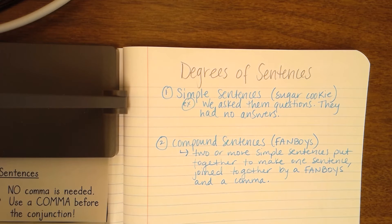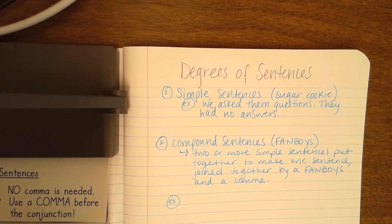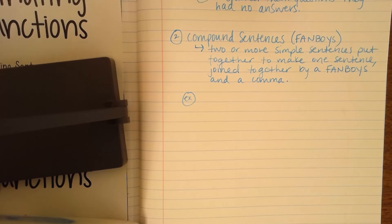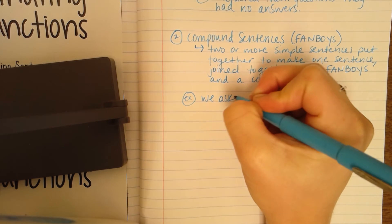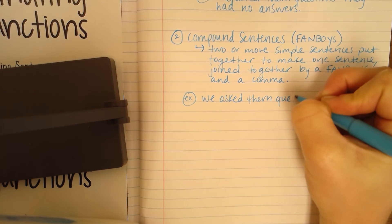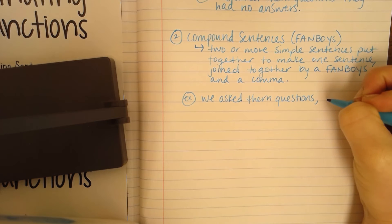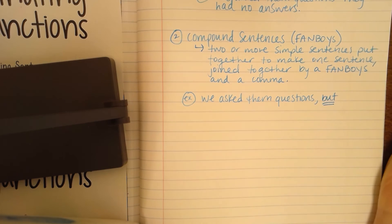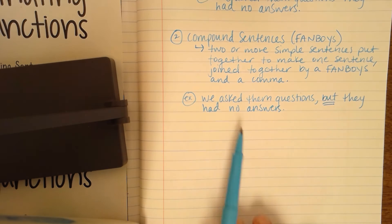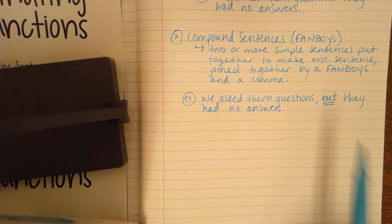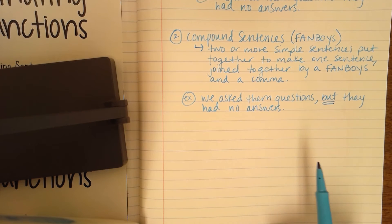Every once in a while, you'll be able to join them together with just a FANBOYS without a comma, but most of the time you'll need a comma and then the FANBOYS to join those two sentences together. Here are some examples — I'm going to build off of the examples from the top. 'We asked them questions, but they had no answers.' Here I'm joining two simple sentences together with a comma and a coordinating conjunction, and now we have a more interesting sentence to read and write.